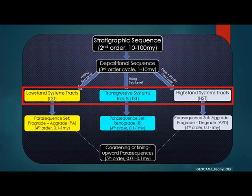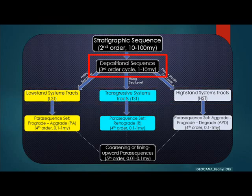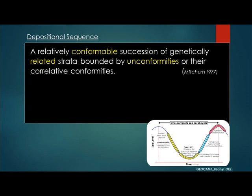In our last episode, we discussed the different systems tracts and the associated strata termination types and surfaces. We'll be looking at the depositional sequence as a package at the third-order scale. A depositional sequence, as defined by Mechun, is a relatively conformable succession of genetically related strata bounded by unconformities or their correlative conformities.